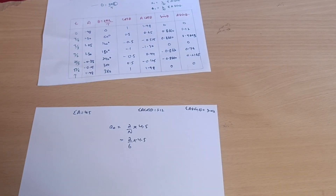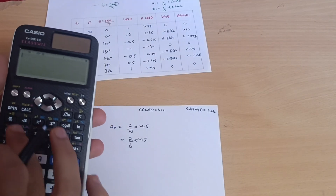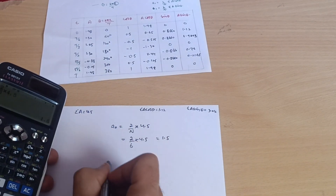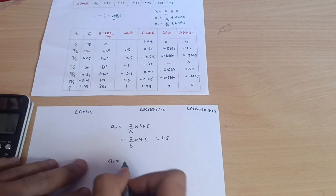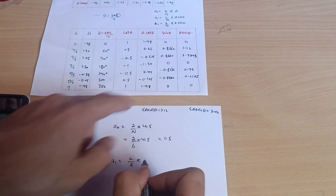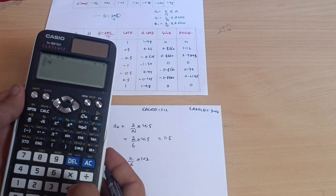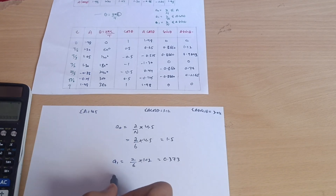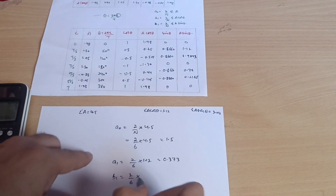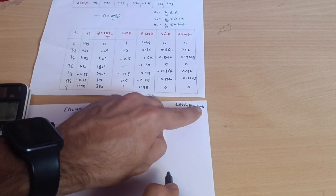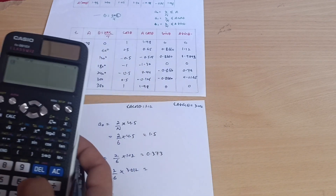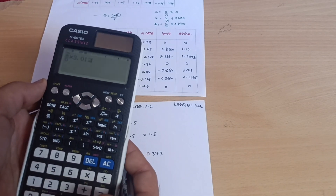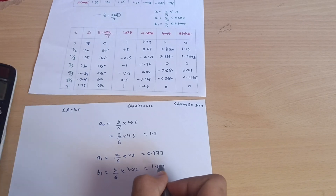Applying the formulas: a₀ = (2/6) × 4.5 = 3/2 = 1.5. Then a₁ = (2/6) × 1.12 = 0.373. And b₁ = (2/6) × 3.012 = 1.004.